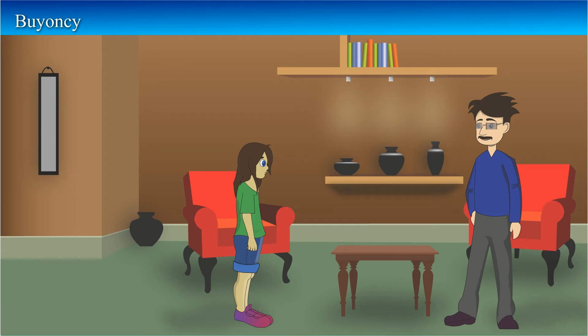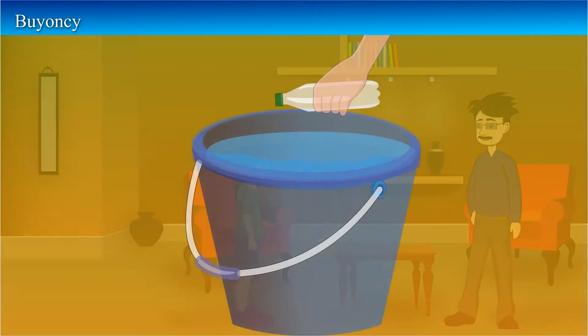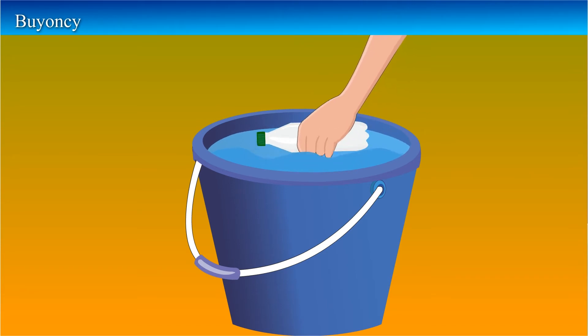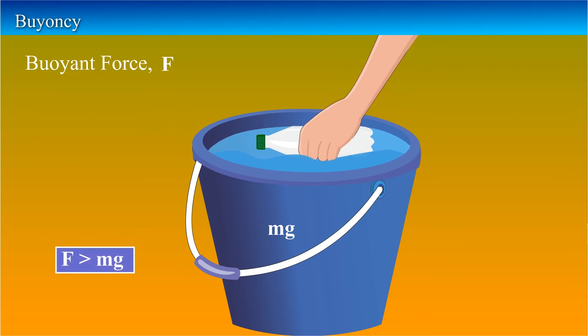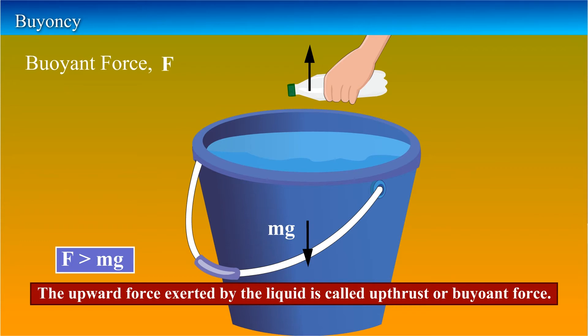This happens because of buoyancy. Buoyancy? What is that, dad? Have you ever noticed that when you try to push a closed bottle into water, water exerts a force on the bottle in an upward direction. Though there is gravitational attraction of the earth, the bottle does not immerse. This is because the upward force exerted by water on the bottle is greater than gravitational attraction of earth, that is, the weight of the bottle. This upward force exerted by the water on the bottle is known as upthrust or buoyant force.